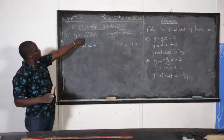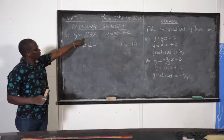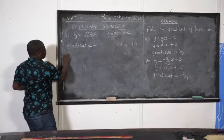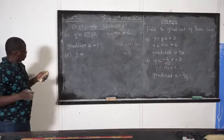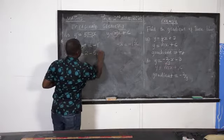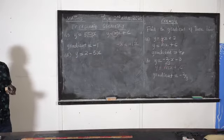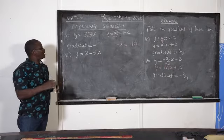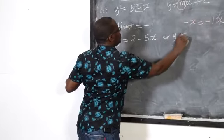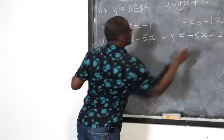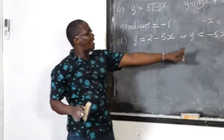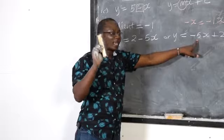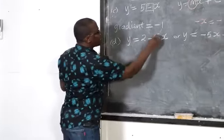5 is your c, the constant, when you compare this with the given equation. We can also have y equals to 2 minus 5x. In this case, when asked to find the gradient, don't rush for 2. You are allowed to rewrite this as y equals to negative 5x plus 2, so that you see your m clearly. Always check the number in front of x. In this case, our gradient is negative 5.